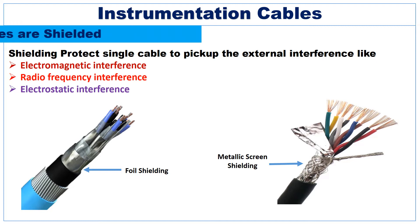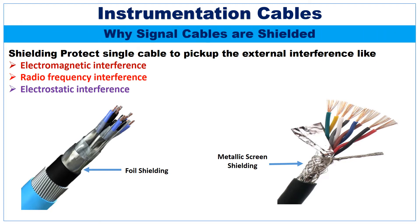Signal cables are shielded because the signal being sent through instrumentation cable may be adversely affected by external electromagnetic interference, radio frequency interference, and electrostatic interference present in the surroundings. The cable shielding protects the signal cable from picking up external interference or noise.